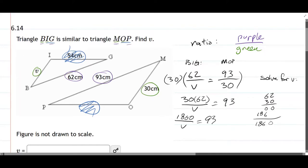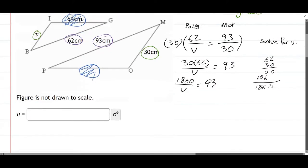All right, last step, well, second to last step. We'll multiply both sides by V. 1860 equals 93V. And last step, divide both sides by 93.